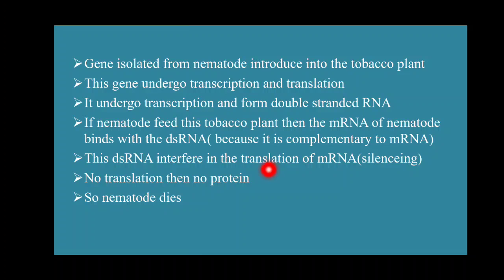This double-stranded RNA interferes with the translation of nematode mRNA and prevents the translation process. This is called silencing — the nematode's mRNA cannot do translation. If there is no translation, no protein will form. Since protein is essential for growth and nutrition, if protein is not formed the nematode cannot get its nutrition and nematode dies.